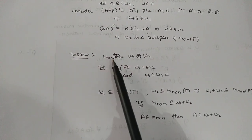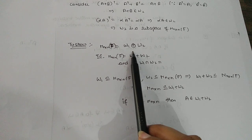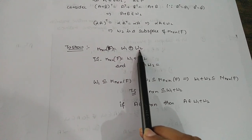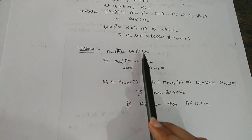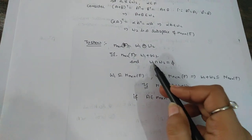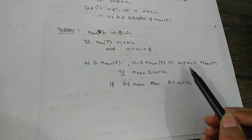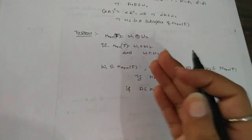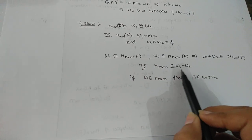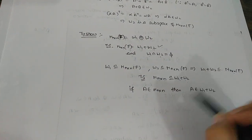Now the next thing we have to show is that M_{n×n}(F) = W1 ⊕ W2 (direct sum), provided F does not have characteristic 2. To show a space is a direct sum of two subsets, we need to prove two things: first, M_{n×n}(F) = W1 + W2; and second, W1 ∩ W2 = {0} — there should be nothing common between W1 and W2. Since both W1 and W2 are subspaces of M_{n×n}(F), their sum W1 + W2 is also a subspace of M_{n×n}(F), and M_{n×n}(F) is a subspace of W1 + W2, so they are equal.